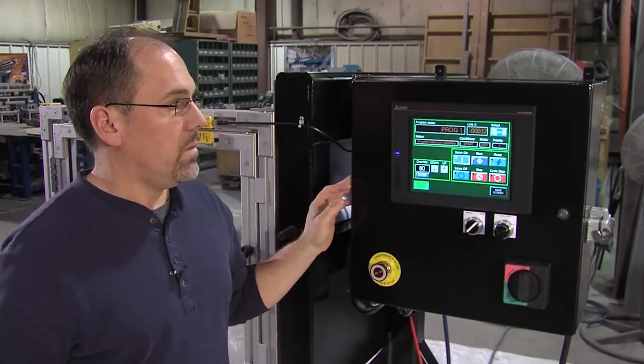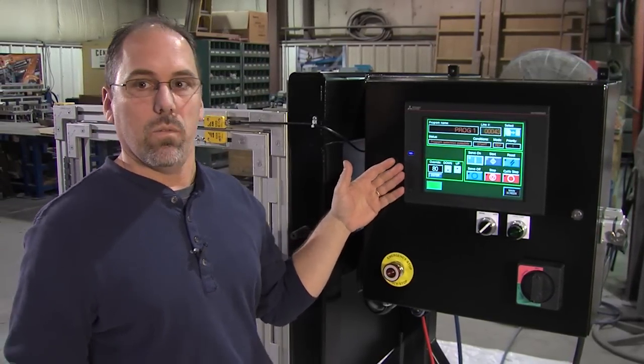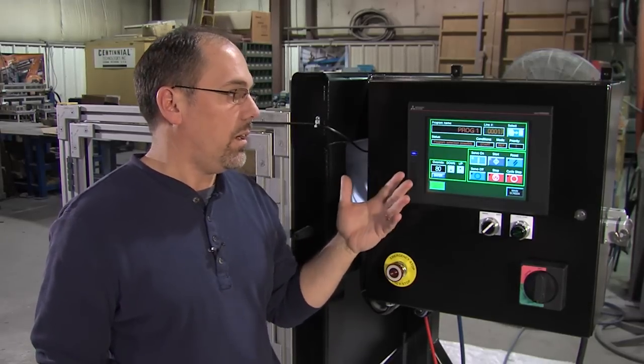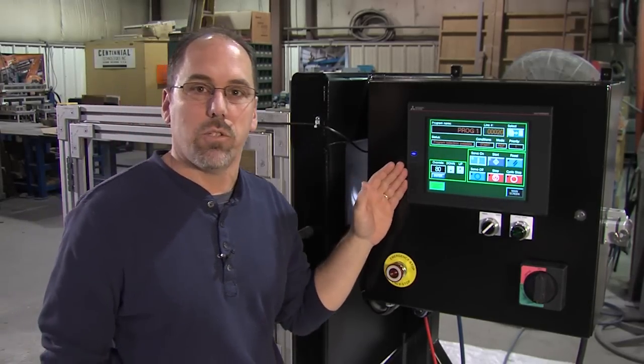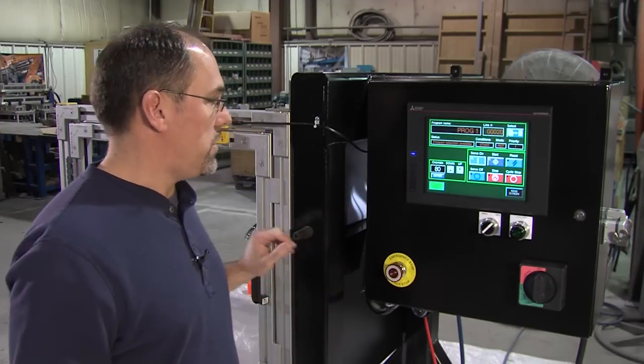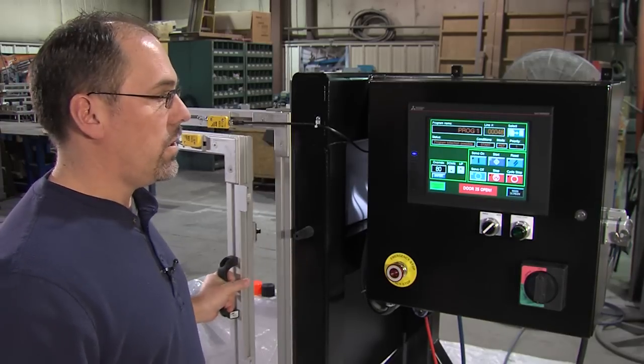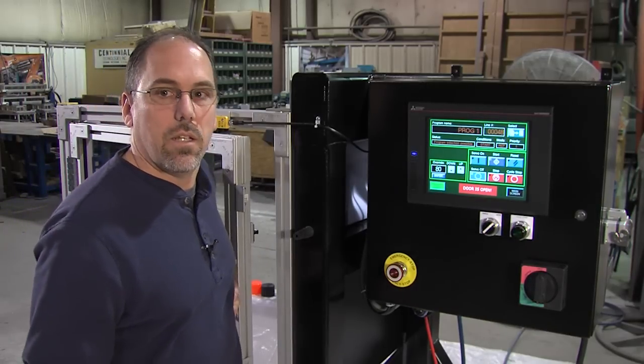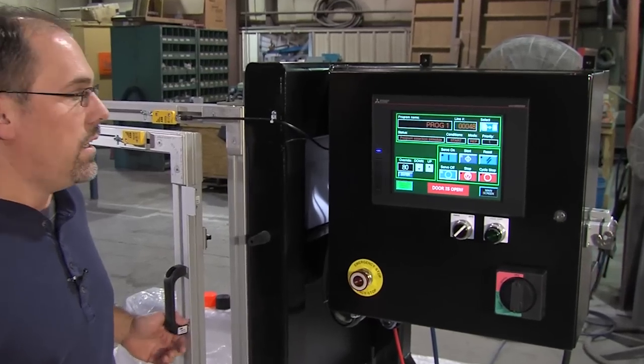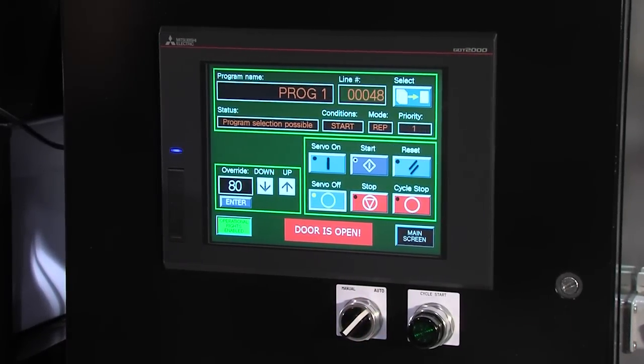We are able to utilize all the standard functionality that would be part of the PLC and GOT system. Part of that would be recipe management and alarming and everything that is part of the GOT system. So as an example here, I'm going to open this door during operation. The robot is stopped immediately and the system knows and can alarm the operator that the door was open.